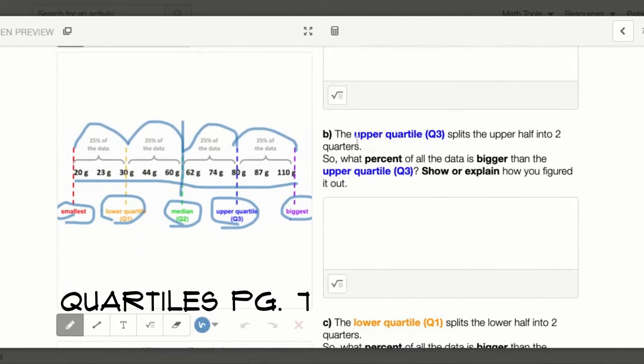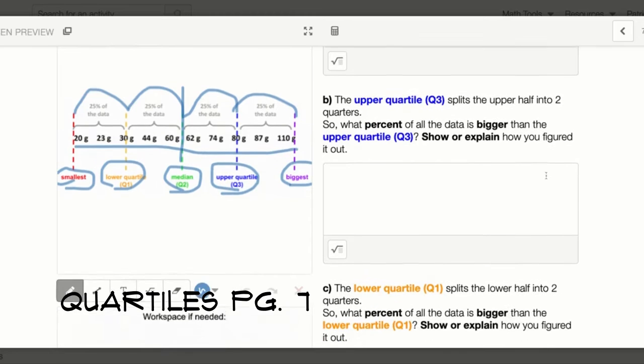Letter B: The upper quartile Q3 splits the upper half into two quarters. So what percent of all the quarters. Show or explain how you figured it out.